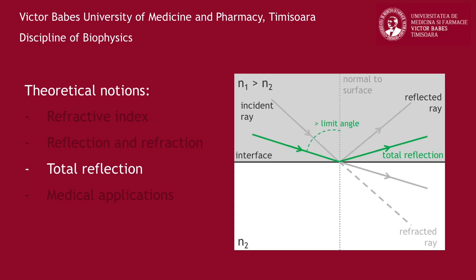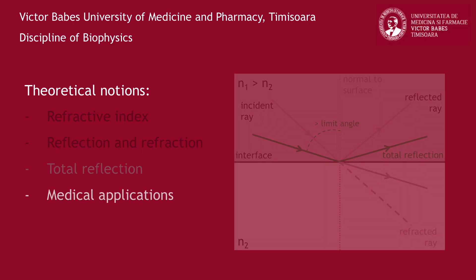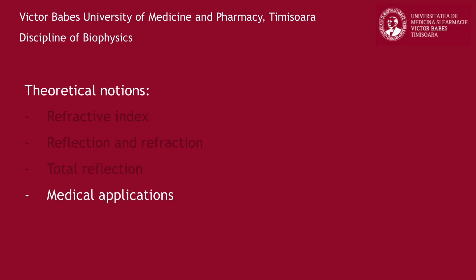In the special case, when the light comes from a more optically dense medium and when the incidence angle is greater than a limit angle, the phenomenon of total reflection occurs. In this case, the light totally returns in the incident medium. Total reflection phenomenon is the underlying principle in optical fibers, which allow the transport of light over long distances with minimum intensity losses.